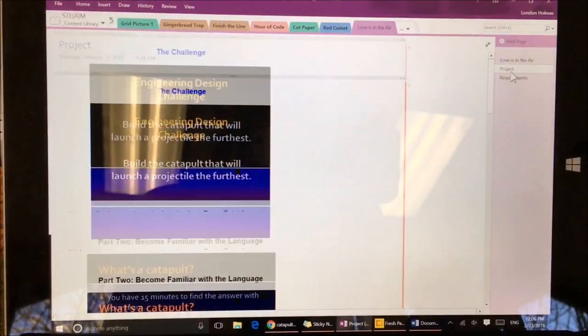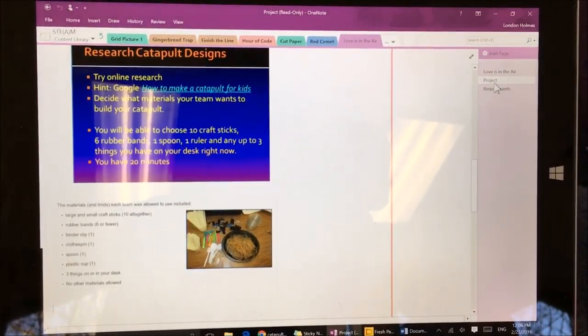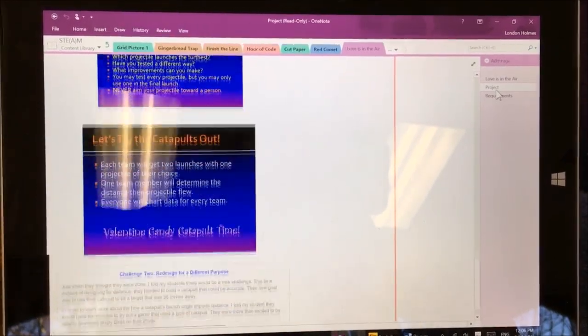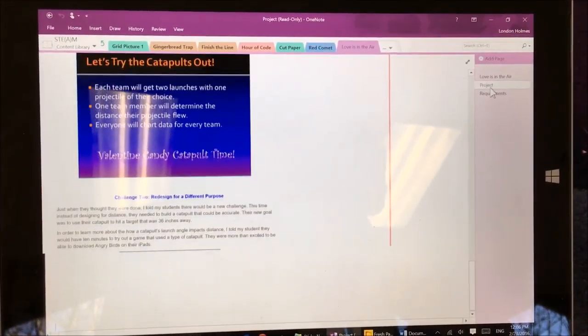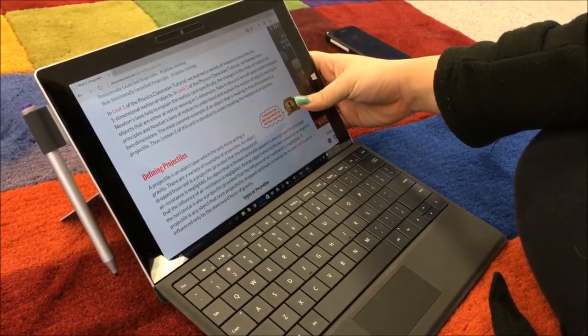Love is in the Air is a project where we were to design a catapult to shoot a piece of candy a far distance. Going by the OneNote, we researched on what catapults are and how they work.